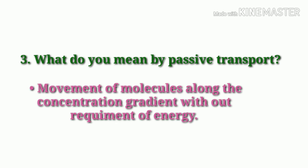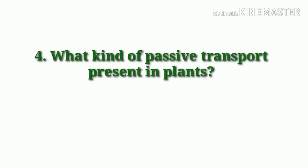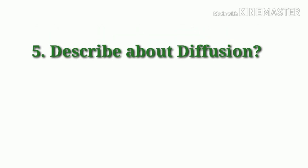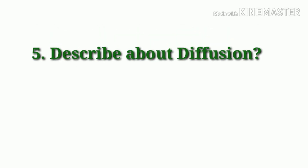What do you mean by passive transport? Movement of molecules along the concentration gradient without requirement of energy is called passive transport. What kinds of passive transport are present in plants? Diffusion, facilitated diffusion, osmosis, and ion channels.